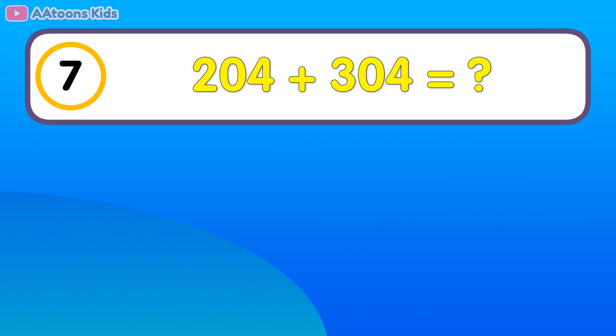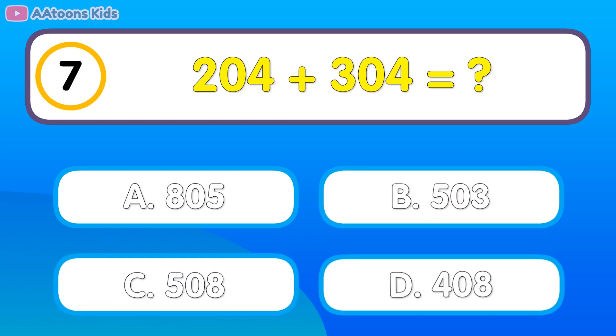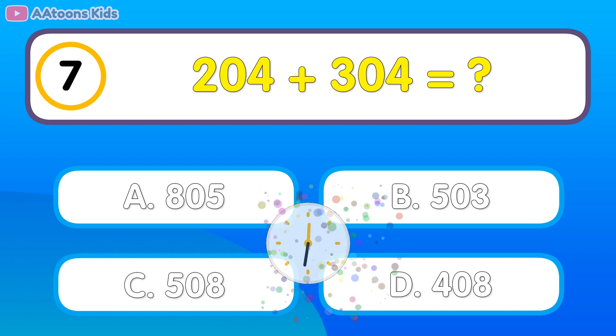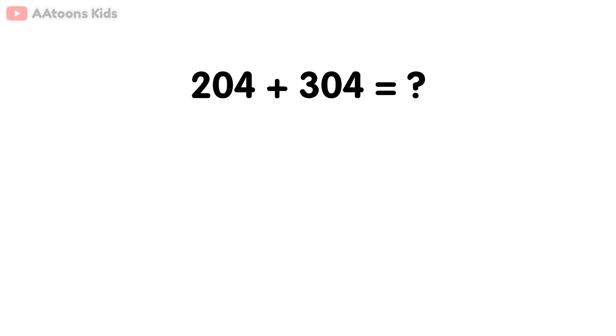204 plus 304 is equal to 508. Let's add 204 plus 304. 4 plus 4 is 8, 0 plus 0 is 0, 2 plus 3 is 5. So 204 plus 304 is 508.